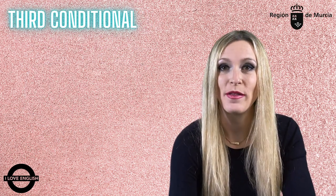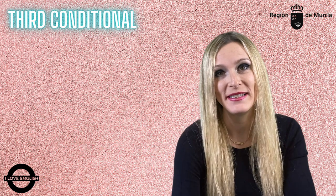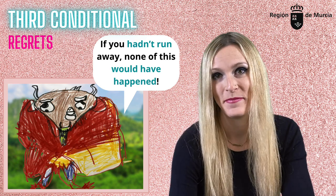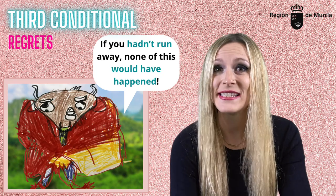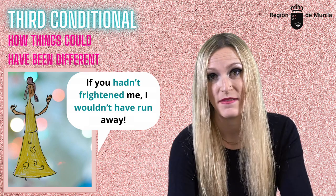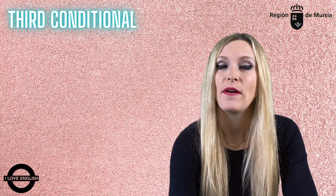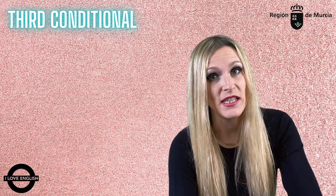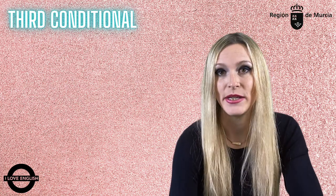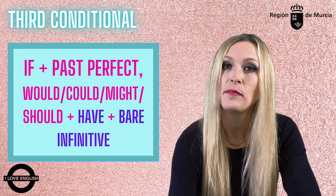Third conditional is used to talk about the past, about regrets, or when we imagine how things could have been different. Beast told Belle: "If you hadn't run away, none of this would have happened. But as you did run away, I was attacked by the wolves." And Belle replied: "If you hadn't frightened me, I wouldn't have run away. But as you did frighten and threaten me, I had to run away." You see, they're talking about how things could have been different if they had made other choices. But now what's done is done. The structure is: the if-clause has past perfect and the result clause uses would have + past participle.